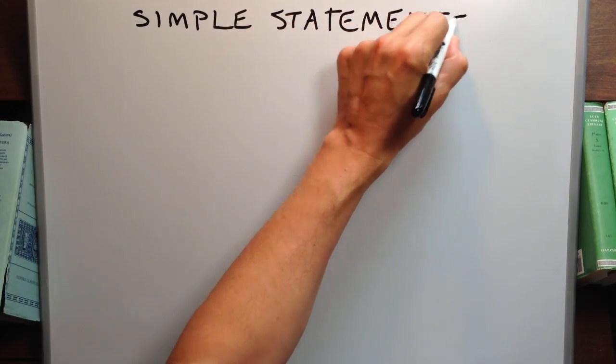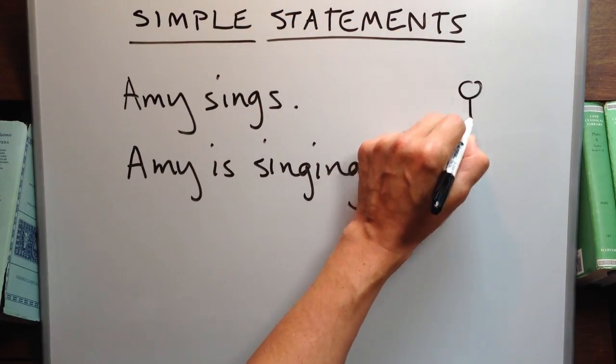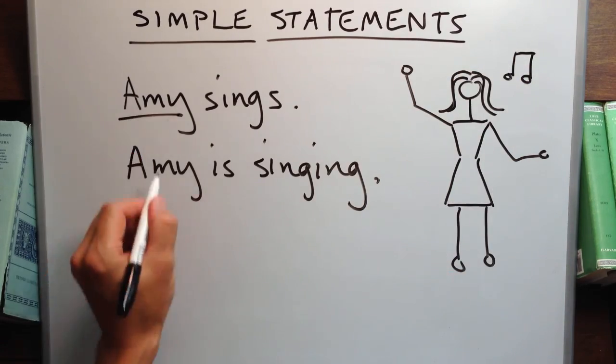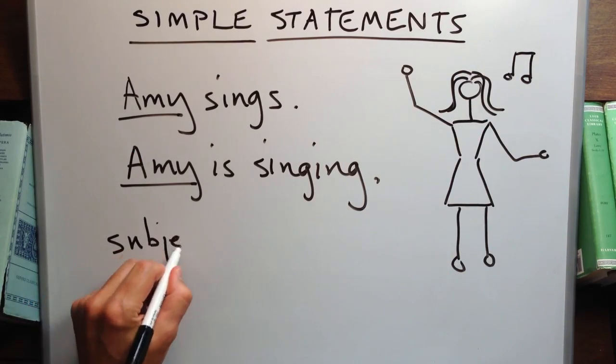Simple statements are composed of a subject and a predicate. Amy sings, or Amy is singing. Amy is the subject. Sings, or singing, is the predicate.